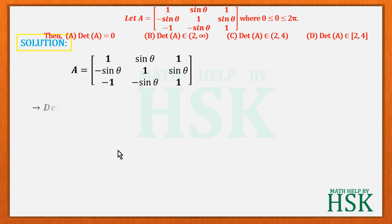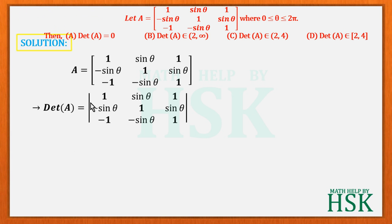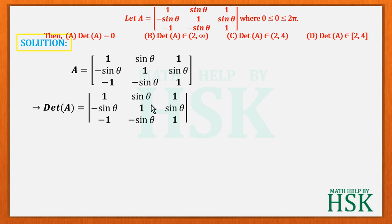The matrix A is given, so the determinant of A equals the 3×3 determinant with entries 1, sin θ, 1; −sin θ, 1, sin θ; −1, −sin θ, 1. We proceed to simplify this determinant by expanding it, as no special trick is directly applicable.